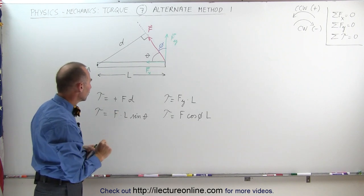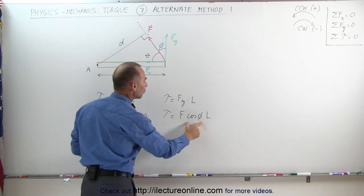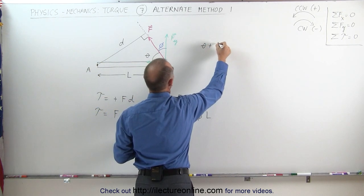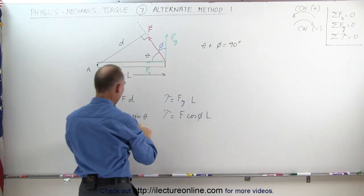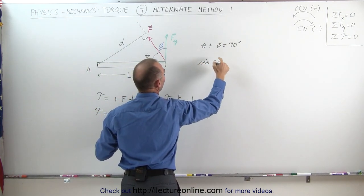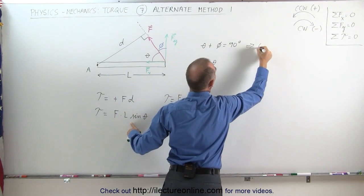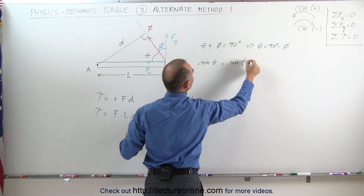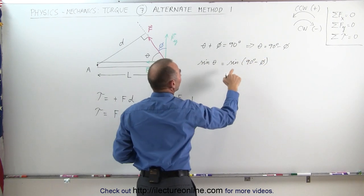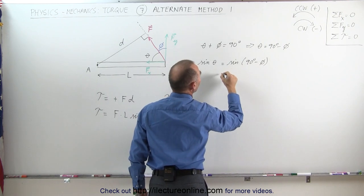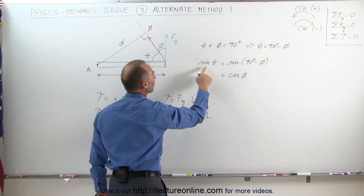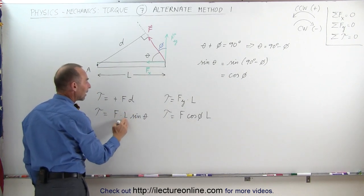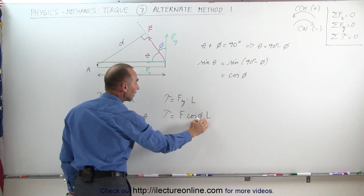Why does that work? Why are those two things the same? Why is L times the sine of theta equal to the cosine of phi times L? Notice that theta plus phi is equal to 90 degrees. So if we write the sine of theta and solve for theta, we get theta equals 90 degrees minus phi. Which means the sine of theta can also be written as the sine of 90 degrees minus phi. But the sine of 90 degrees minus phi is the same as the cosine of phi. So the sine of theta is equal to the cosine of phi.